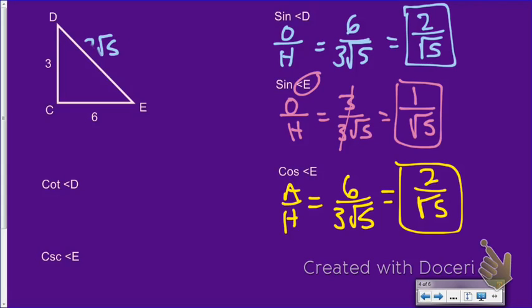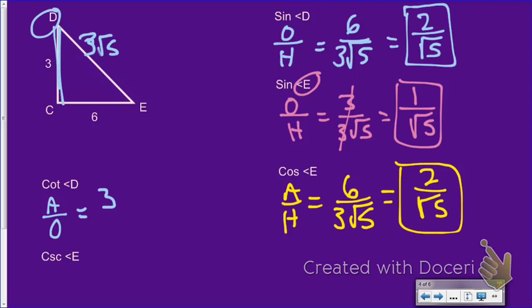The next one we'll look at is one of the new ratios — cotangent. Cotangent is the reciprocal of tangent, the same as 1 over tangent, so I take the tangent ratio and flip it. Tangent is opposite over adjacent, so cotangent is adjacent over opposite. For angle D, my adjacent is 3 and my opposite is 6, so cotangent of D = 3/6, which simplifies to 1/2.